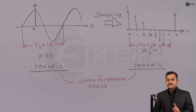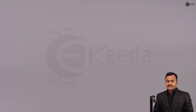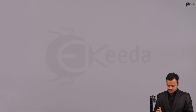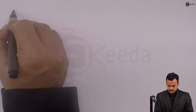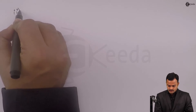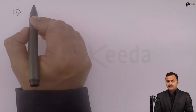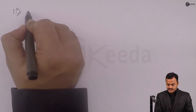So in this case, x(t) was periodic and by doing sampling x(n) also remains periodic. The most important thing to observe is that both have the same fundamental period of 12. This is case one.